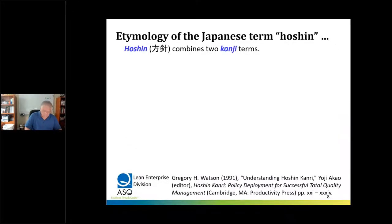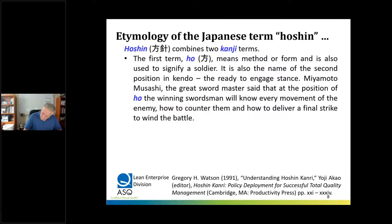Hoshin projects increase the capability of the daily management system to produce value. Now, the etymology of the Japanese term hoshin — I wrote about it in 1991 in Dr. Akao's first book on Hoshin-Kanri. Hoshin combines two kanji terms. The first term is ho, and it means method or form. It's also used to signify a soldier, and it's the name of the second position in kendo — fighting with Japanese swords — where you're ready to engage.